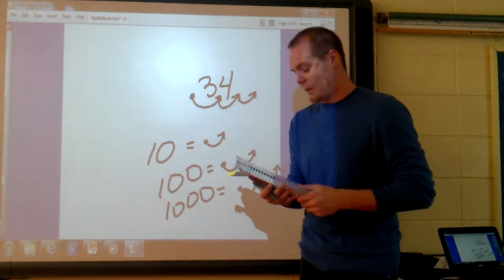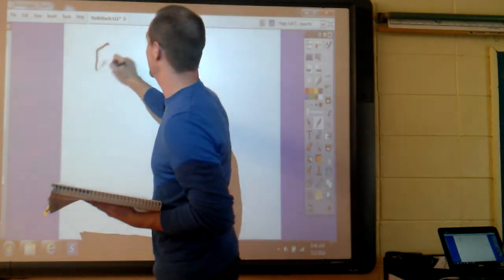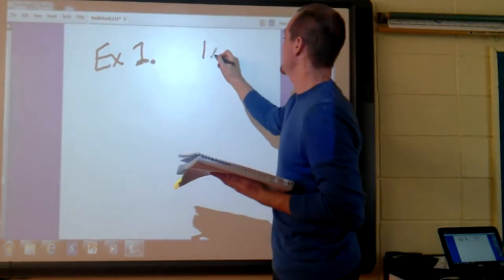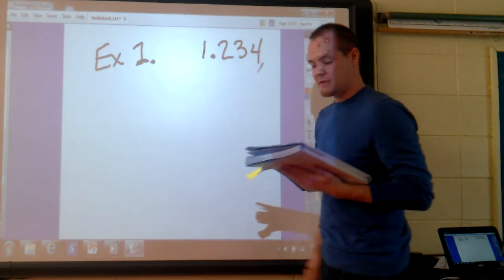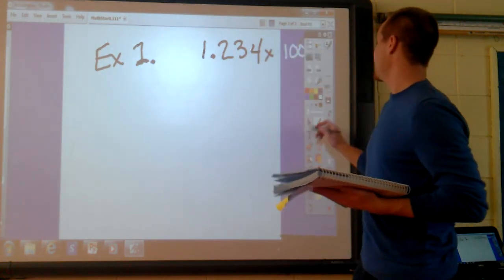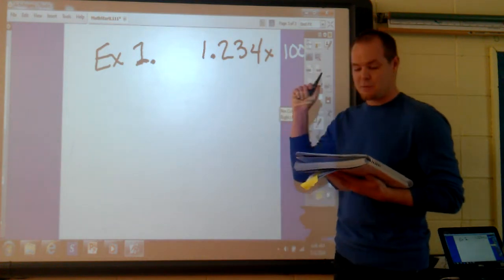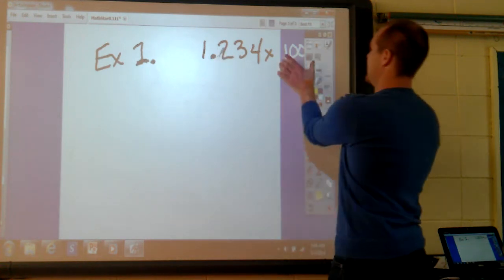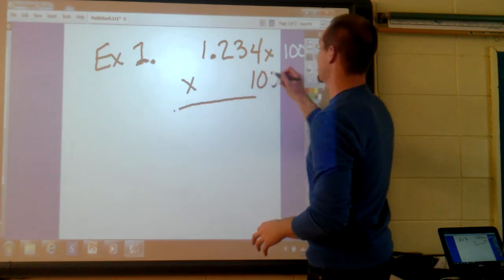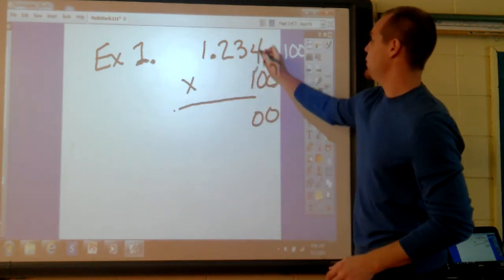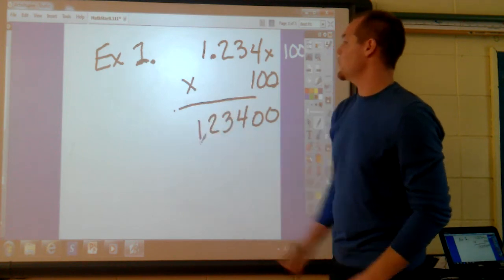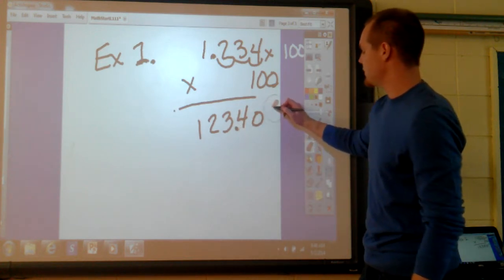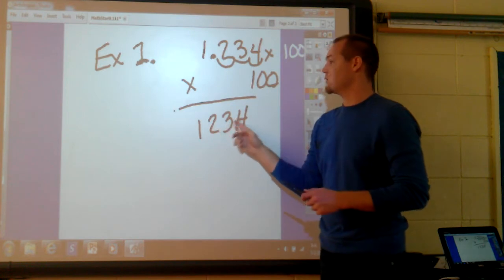Now let's try a few practice problems. Example number one. Example number one, it says multiply 1 and 234 thousandths by 100. When I see the number 100, I understand that I can set this up vertically and I can multiply it like this. And I can hang my zeros off. And I can drop them down and multiply 4, 3, 2 and 1. I have 1, 2, 3 decimal places. 1, 2, 3 places here. Drop off these zeros now. And I have my answer of 123 and 4 tenths.